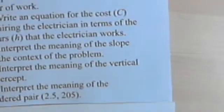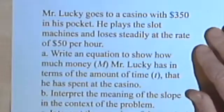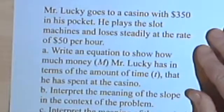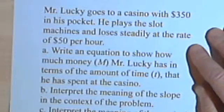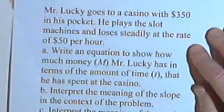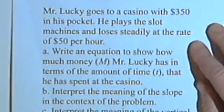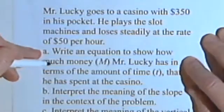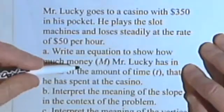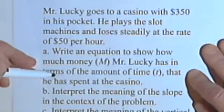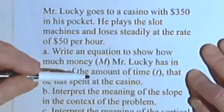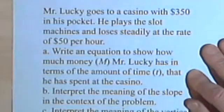Here's one more problem. Mr. Lucky goes to a casino with $350 in his pocket. He plays the slot machines and loses steadily at the rate of $50 per hour. Write an equation to show how much money M Mr. Lucky has in terms of the amount of time he has spent at the casino.